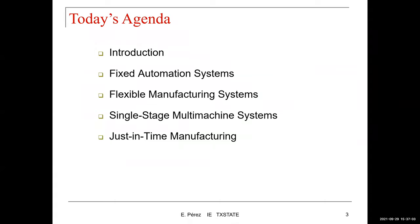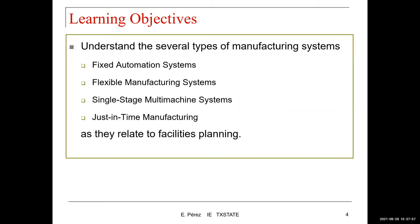The agenda for today covers: an introduction to manufacturing systems, and then we'll talk about fixed automation systems, flexible manufacturing systems, single-stage multi-machine systems, and just-in-time manufacturing. The learning objective is to understand several types of manufacturing systems as they relate to facilities planning, which is our goal.